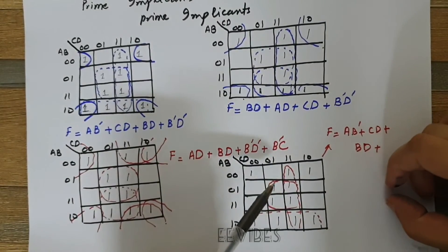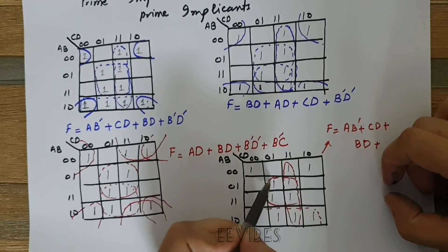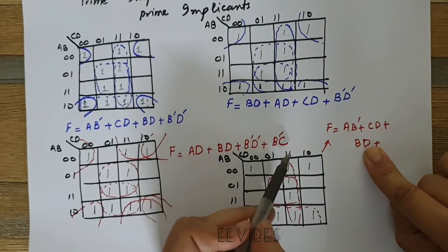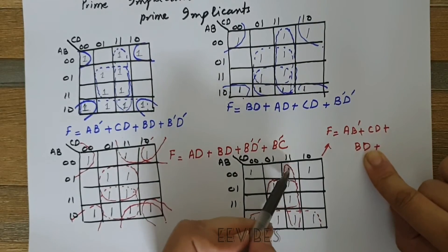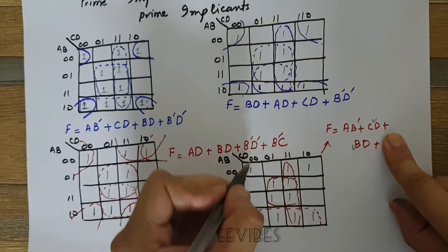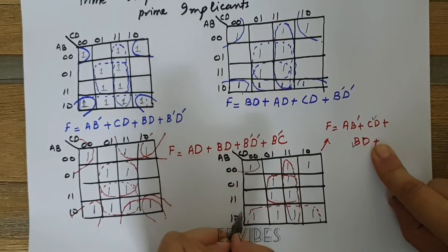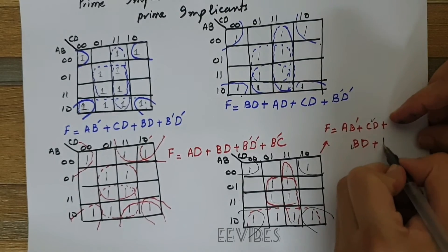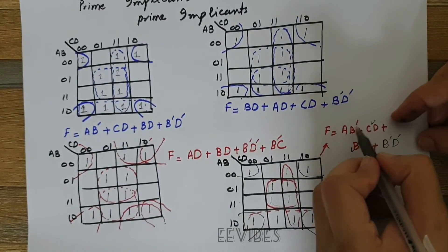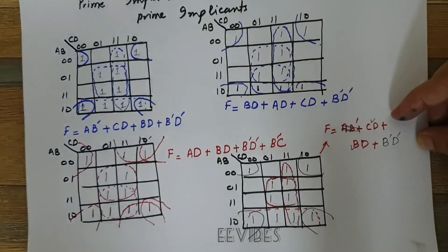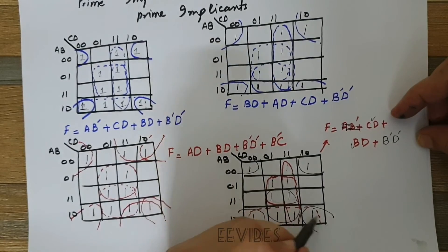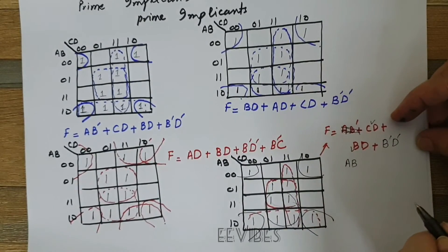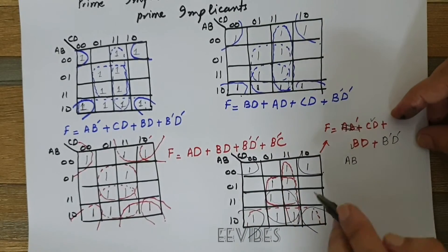Looking at this last expression again: combining four adjacent squares gives BD, combining consecutive ones gives CD, combining the corner four ones gives B'D', and combining these consecutive four ones in a wrap gives AD.